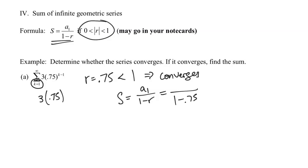That's going to give me 3 times 0.75 to the 1 minus 1. Well, 1 minus 1 is 0. Anything to the 0 is 1, and so this is just going to be 3. Again, just double check to make sure what the first term is, because you might be surprised. Plugging this into the calculator, we're going to get a sum that is equal to 12.